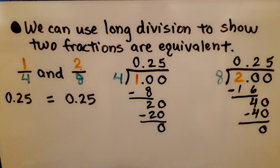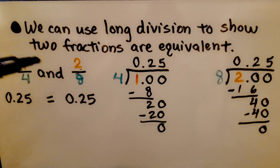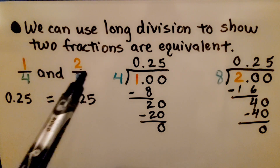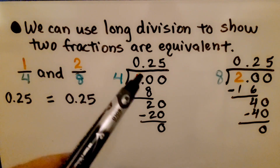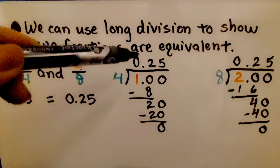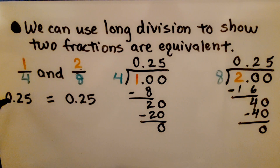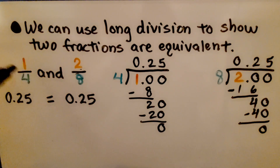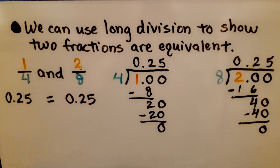We can use long division to show two fractions are equivalent. We have 1 fourth and 2 eighths. We do 1 divided by 4 and 2 divided by 8 and get the same decimal: 25 hundredths equals 25 hundredths. We know these are equivalent fractions because they have the same decimal equivalents.